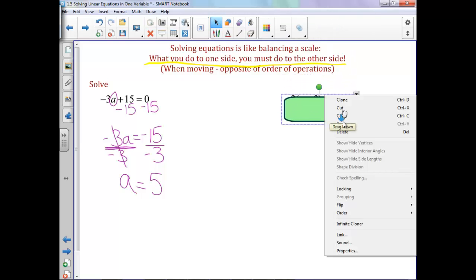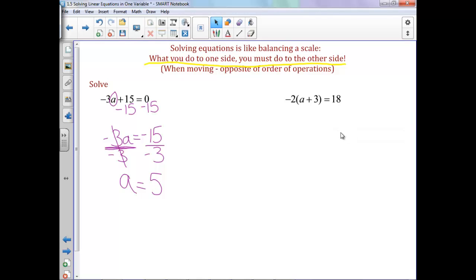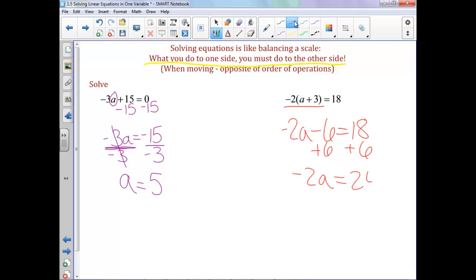On this next one, first off, we need to distribute, because we need to get all of our grouping symbols out of the picture before we can add or subtract from both sides. So when we distribute this negative 2, we get negative 2a minus 6 equals 18. Now it's very similar to the last one we did. We need to move the 6, do your addition and subtraction first. So I have negative 2a equals 18 plus 6 is 24. And then we divide by negative 2, and a equals negative 12.